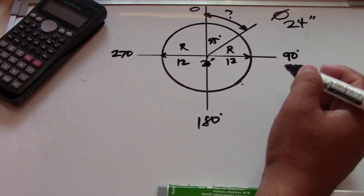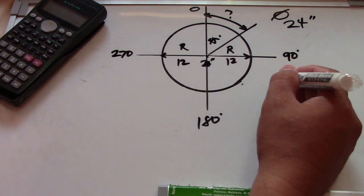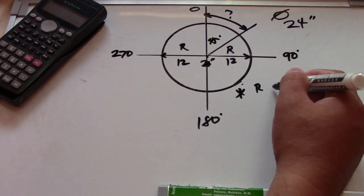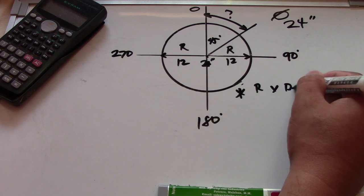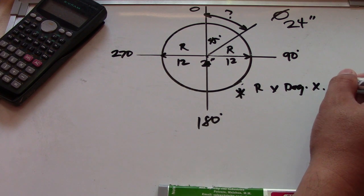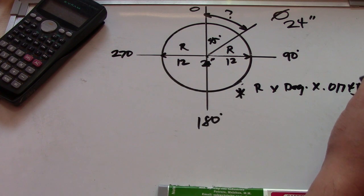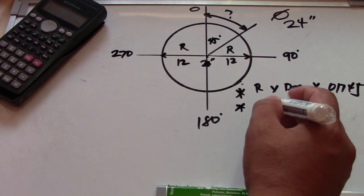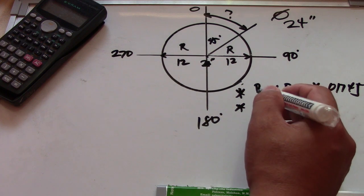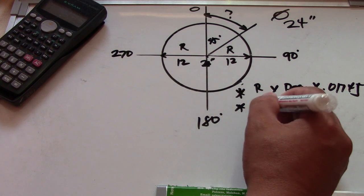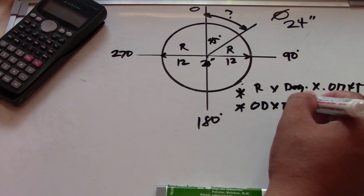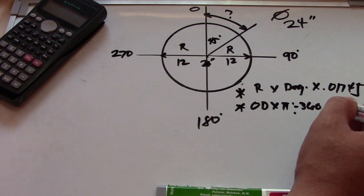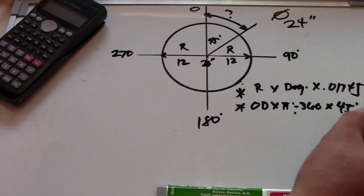So here is the formula — please take note: Formula 1 is radius multiplied by degrees multiplied by 0.01745. Formula 2 is outside diameter multiplied by pi divided by 360, times the given degree, which is 45 degrees.